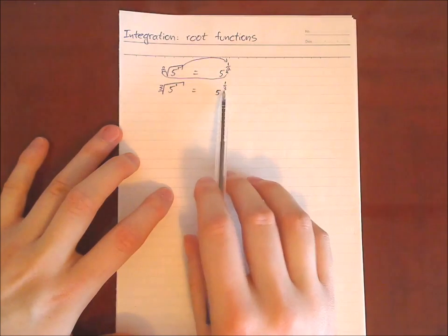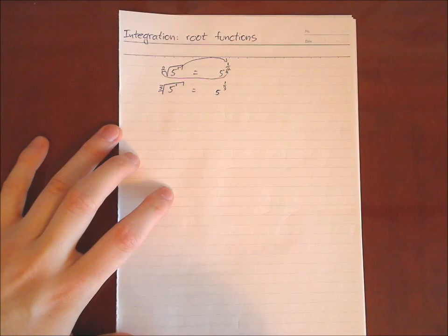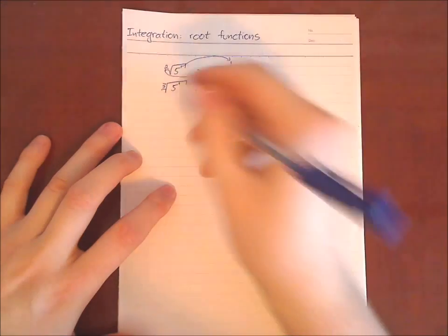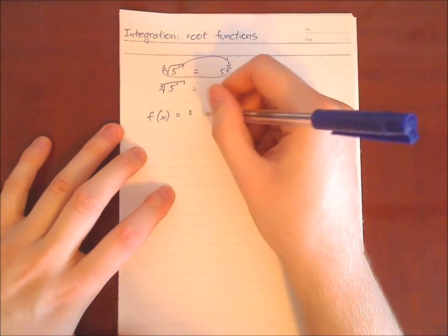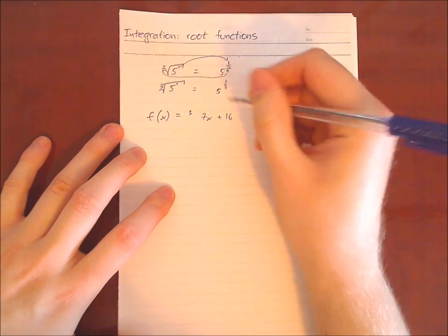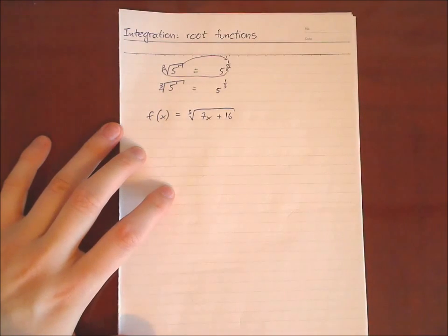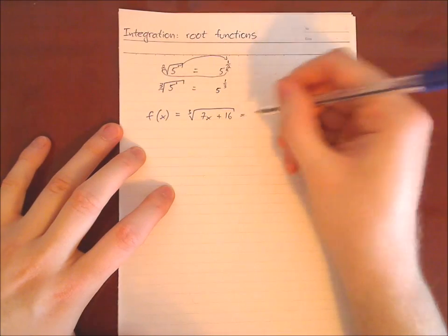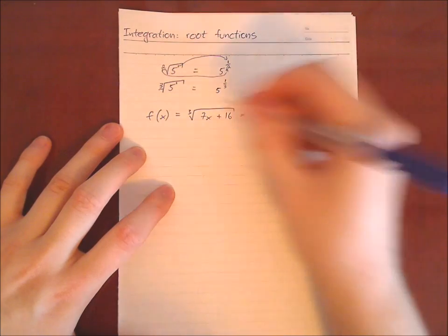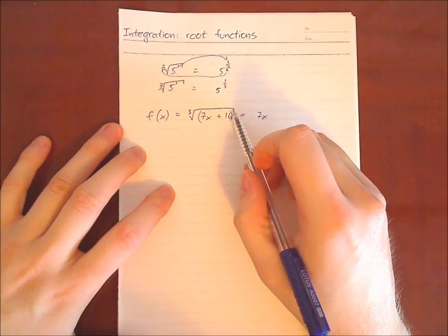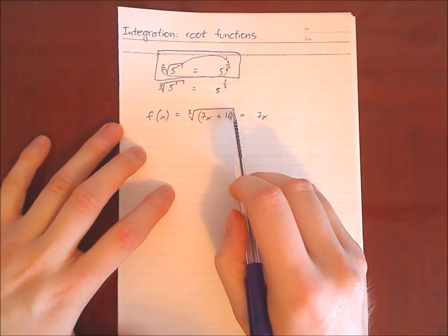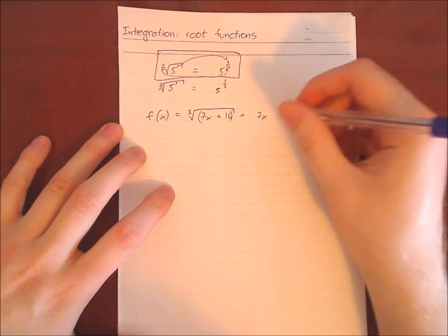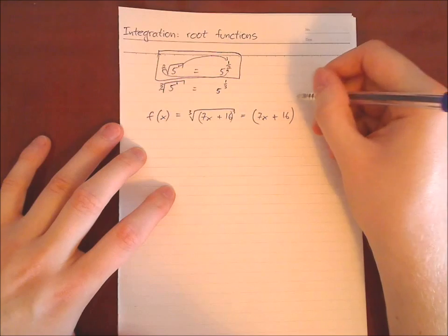Then you see it's very easy — you can easily apply the power rule when you do integration or differentiation. So let's calculate an example. We have a given function which is the third root of 7x plus 16, and we should integrate it. First, apply the trick: write it as a power. So you have 7x plus 16 to the power of 1 — and using that trick, the 1 goes in the numerator and the 3 goes in the denominator — so 7x plus 16 to the power of 1 third.